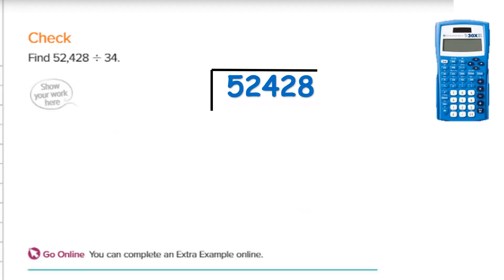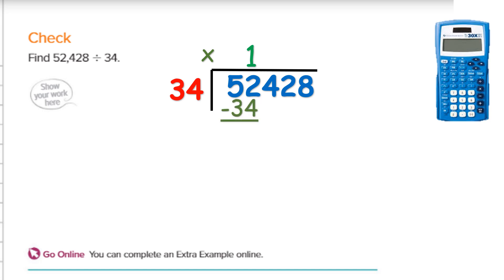On this check, same process. We take the first number — 52,428 — as our dividend inside the box. My second number, 34, goes on the outside. I ask: will 34 go into 5? No. Will 34 go into 52? Yes. That 1 has to go above the 2, and I have to make sure everything is lined up nice and neat. I show the multiplication: 1 times 34 is 34, and I subtract.